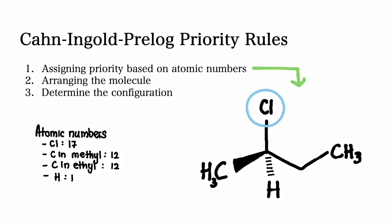So chlorine has the highest atomic number, which is 17. Therefore, chlorine gets the highest priority number, which is 1.